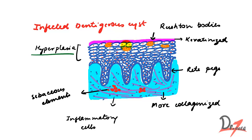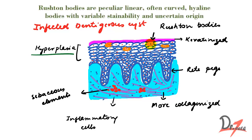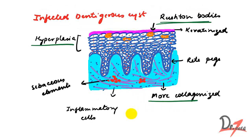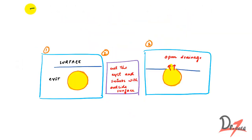In the infected cyst we also have Rushton bodies — these are said to have hematogenous origin, arising from blood components, and little is known about why they appear. We also find red apex (rete ridges), more collagenized connective tissue, and inflammatory cells.